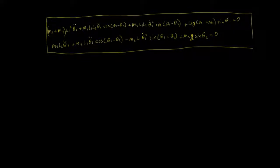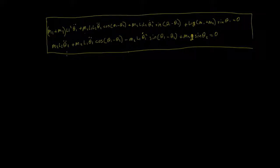This is video number three in the derivation of the differential equations for a double pendulum. In the last video we derived these two second-order coupled differential equations — quite a long and involved derivation. These are second-order differential equations with theta double-dot, and they're coupled because theta one and theta two appear in both equations.